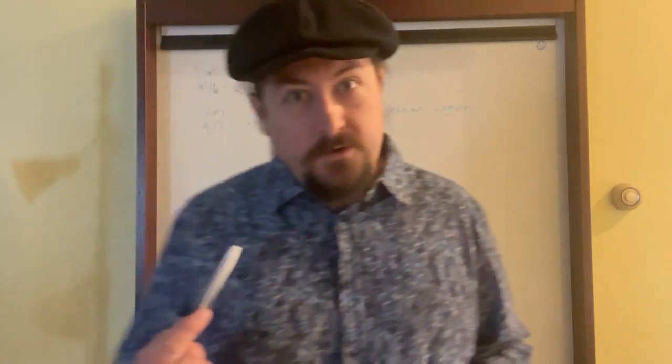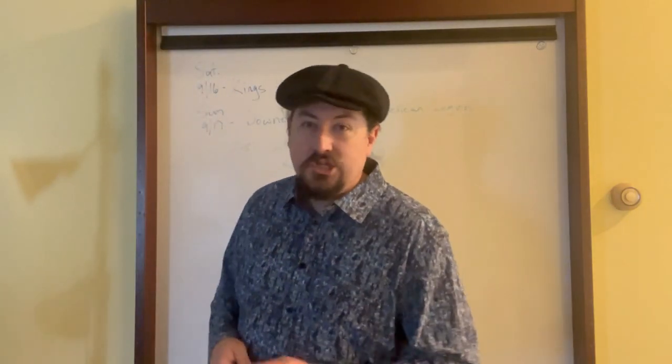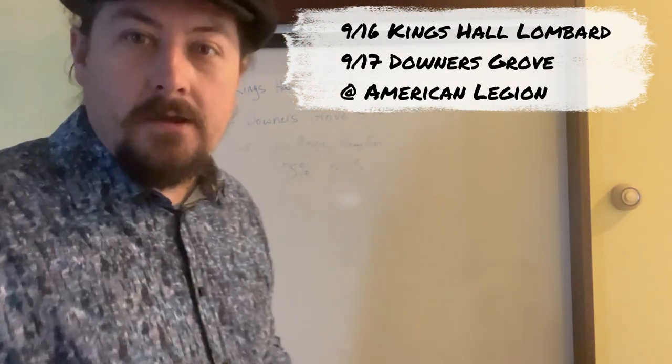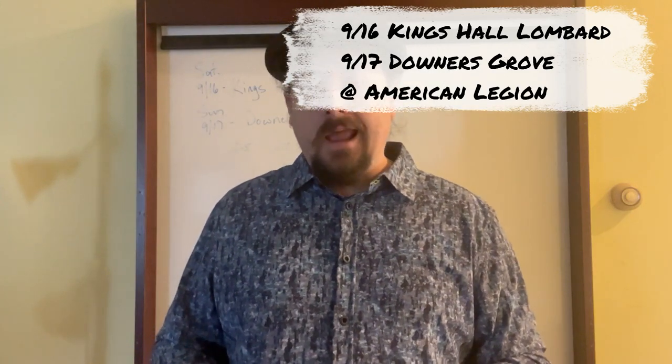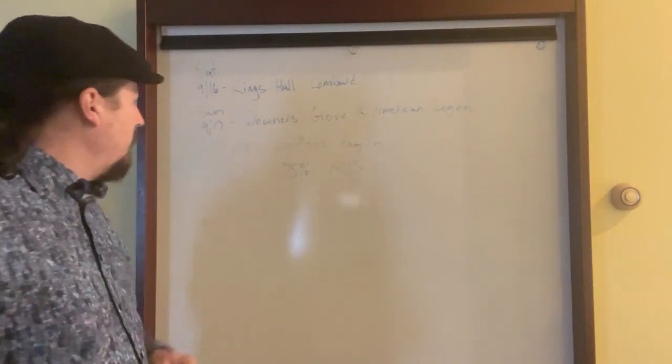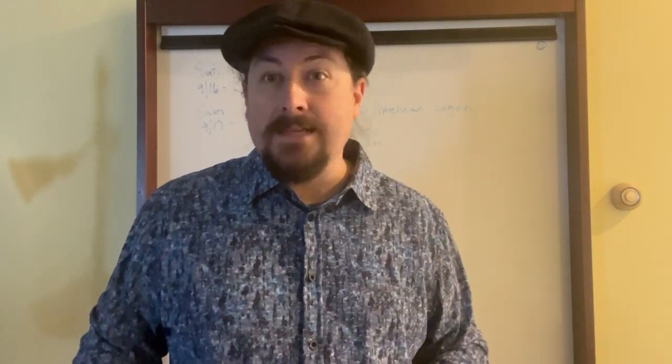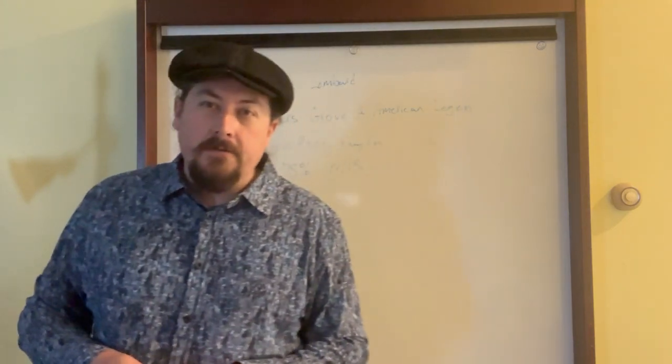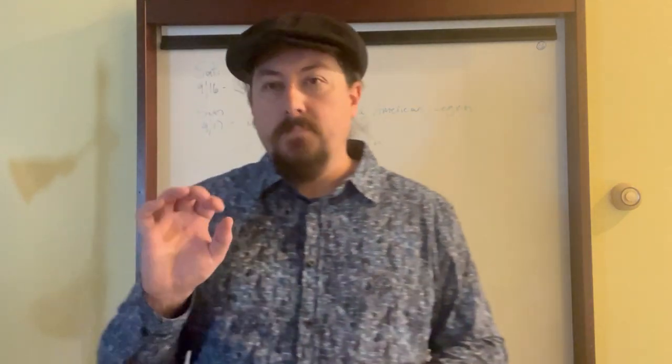First, housekeeping. If you want to play with yours truly, I'm going to be in the Chicago area. We have locations now, so on September 16th, which is a Saturday starting at one o'clock, we are going to be doing a meetup game at the Kings Hall in Chicago on Lombard. And then on Sunday, September 17th, we're going to be at Downer Groves again at the American Legion. It's a great place to play.